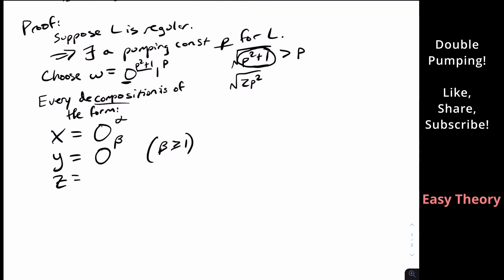So Z is the rest of the string. So that's P squared plus one, the original that we started with, take away alpha for the X part, take away beta for the Y part, and then we have the rest of the string. So one to the P.